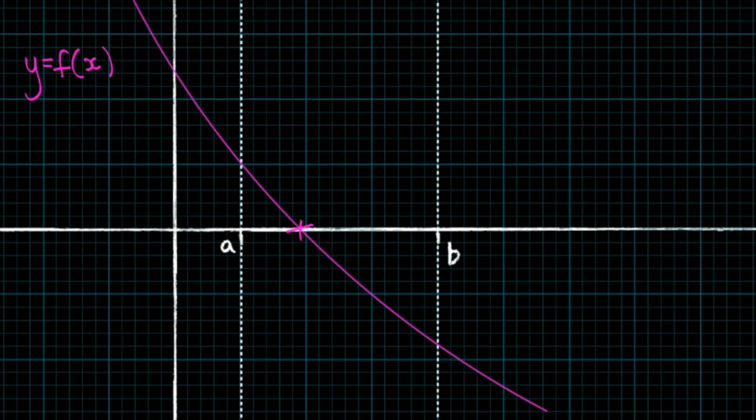Let's assume that we were unable to calculate the root exactly using algebraic methods. So instead, using numerical methods, we're trying to find a range in which the root lies. And we're doing that by identifying a change of sign.